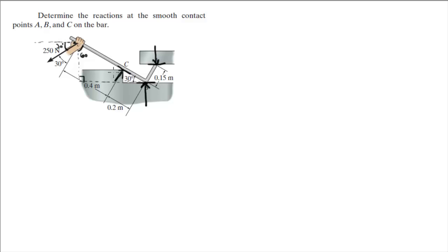Now we've found some angles. This angle right here is 60 degrees, because this angle right here is 30 degrees, same as this one. This little tiny angle right here is also 60 degrees — I'm not gonna write it down, otherwise I'll clutter it up too much. I like to draw all my angles in my free body diagrams; it makes it easier to do some quick calculations.